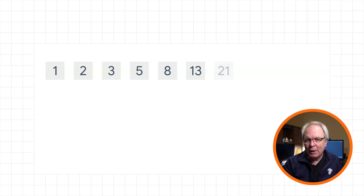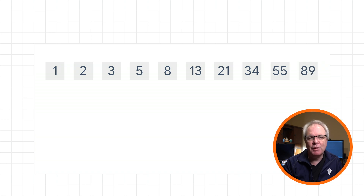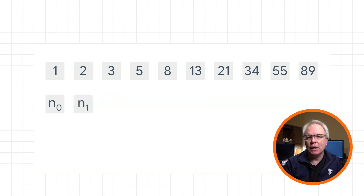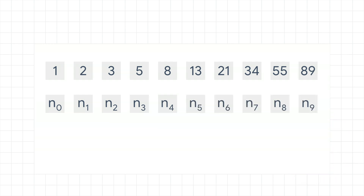So let's take a look at some numeric sequences and explore the anatomy of them. Here's a very famous one called the Fibonacci sequence. To describe the rules that make this sequence, let's describe the numbers using a variable. We can say n0 for the first number, n1 for the next, and so on. The rule that defines the sequence is that any number in the sequence is the sum of the two numbers before it. So if we start with 1 and 2, the next number is 1 plus 2, which is 3. The next number is 5, which is 2 plus 3, and so on.